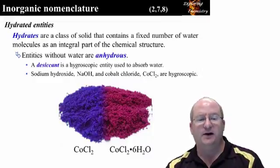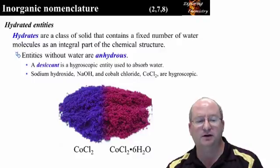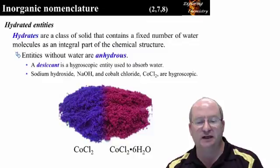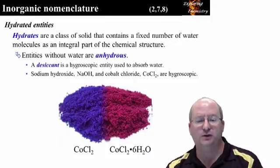Ionic entities are often hydrated, meaning that the solid contains a fixed number of water molecules in the chemical structure. Cobalt 2 chloride is interesting because anhydrous cobalt 2 chloride is blue, while cobalt 2 chloride hexahydrate is pinkish red.